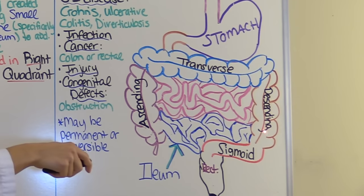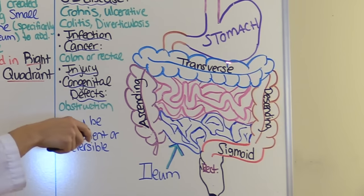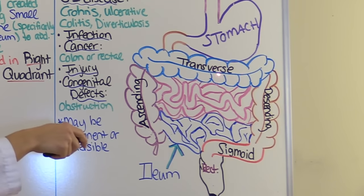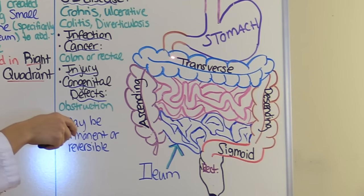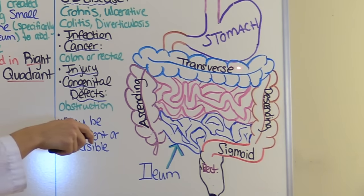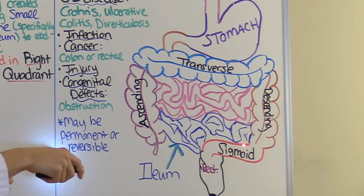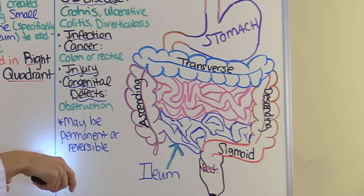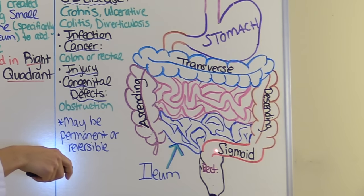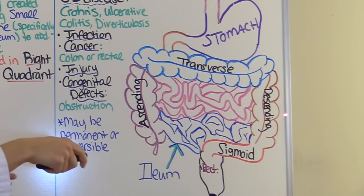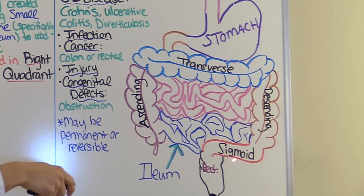Then the food flows into the large intestine, also called the colon. It enters through the cecum, up through the ascending colon, across the transverse colon, down through the descending colon, into the sigmoid colon. The large intestine's big role is to absorb water and help form the waste so you can pass it as stool through the rectum, then to the anus and out.